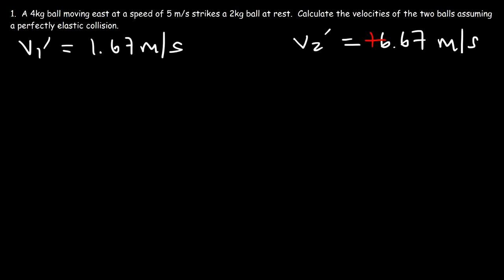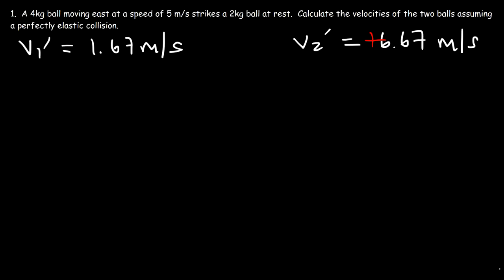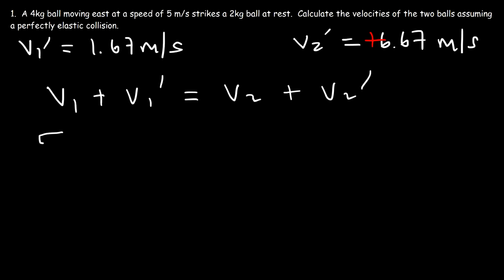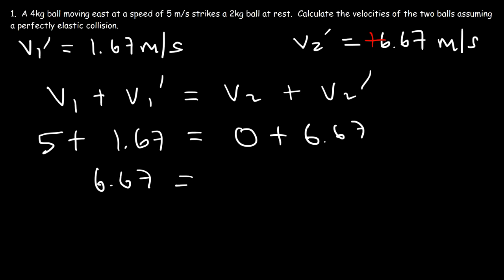Now let's make sure kinetic energy is conserved. The simplest way is to use the equation v1 + v1' = v2 + v2'. v1 is 5, v1' is 1.67, v2 is 0, and v2' is 6.67. So 5 + 1.67 = 6.67, and 0 + 6.67 = 6.67. Both sides are equal, confirming kinetic energy is conserved.